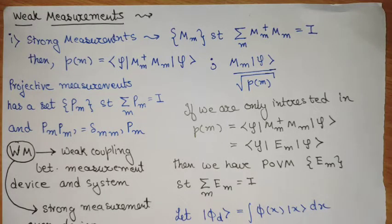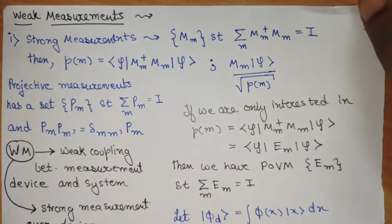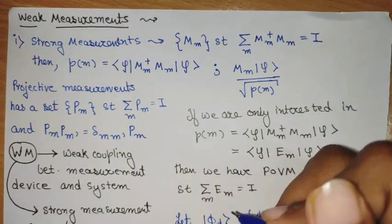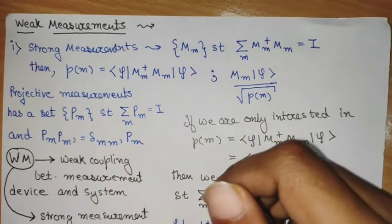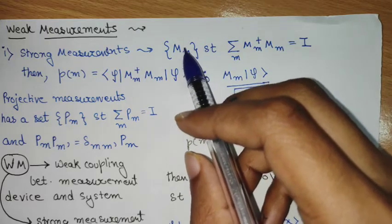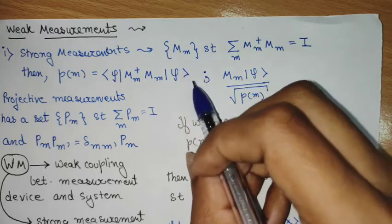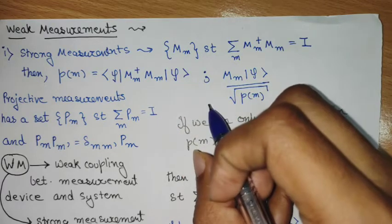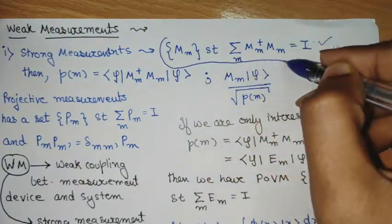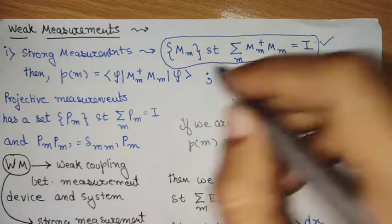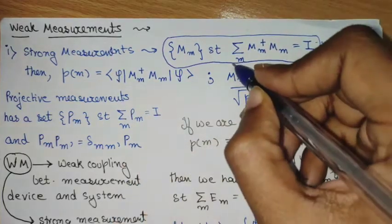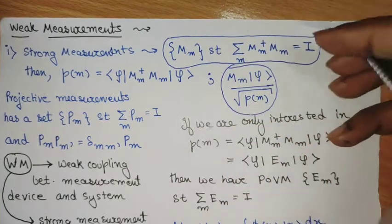Before understanding weak measurement, we start with what is the measurement procedure as discussed in quantum information. As per the measurement postulate, once we measure the state, the state collapses into one of the eigenstates of the operator that we are measuring. We have a measurement operator indexed by the measurement value M that it will produce. The set of measurement operators and probability conservation gives us the completeness relation. The probability of getting M is given by this quantity, and the collapsed state after getting value M is this particular quantity. This is the standard measurement postulate of quantum mechanics.